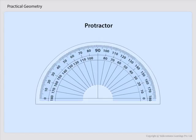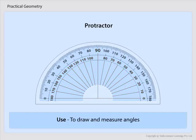The protractor. A semi-circular device graduated into 180 degree parts. The measure starts from 0 degrees on the right hand side and ends with 180 degrees on the left hand side and vice versa. It is used to draw and measure angles.